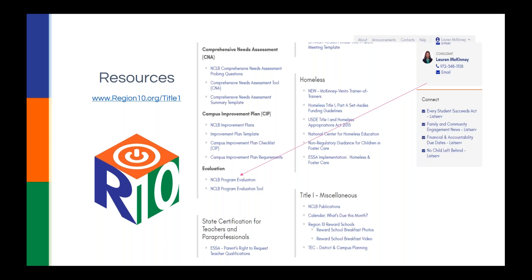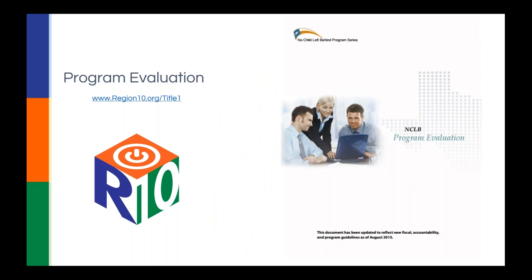The program evaluation booklet still says No Child Left Behind because as I mentioned, we don't have one specific to ESSA, but again the process is the process. You can evaluate your program in any way you see fit, as long as you have documentation and data to support why you evaluated it that way, what the results were, and why you'll continue, alter, or cease that program. The program evaluation tool is very general in nature, and the evaluation booklet with facilitating questions on how to start thinking about the process is available on that website.